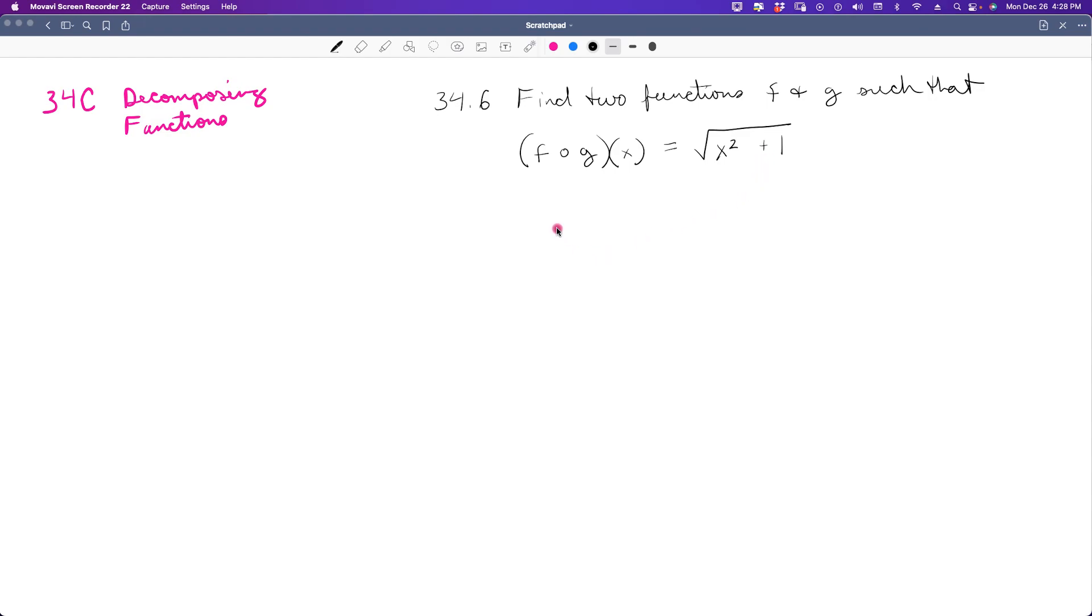So you could easily say that f of x is equal to the square root of x, and what's substituted in for x is going to be g of x equals x squared plus 1. When you put this together like this, this is going to be substituted in for this x. So it's going to look like the square root of x squared plus 1, because we put all of this value in for the x in the f.